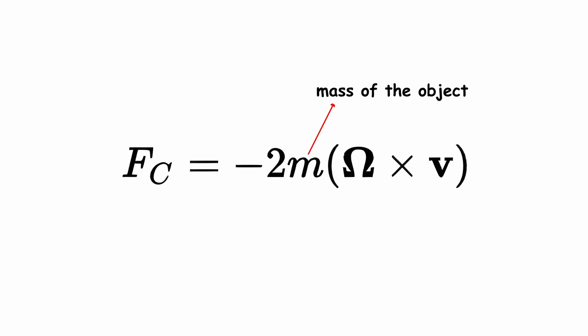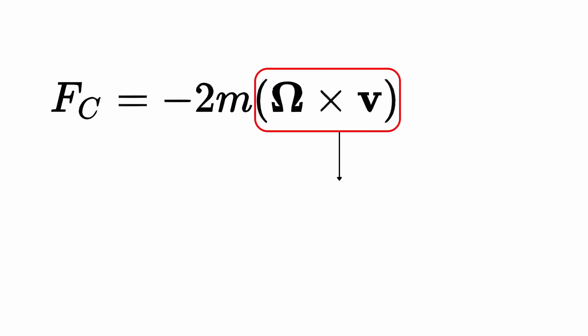Where m is the mass of the object, omega is the angular velocity vector of the rotating system, and v is the velocity of the object. The vector product indicates that the force is perpendicular to both omega and v.